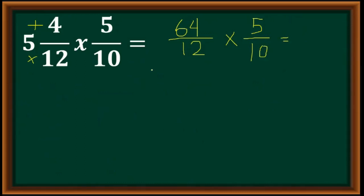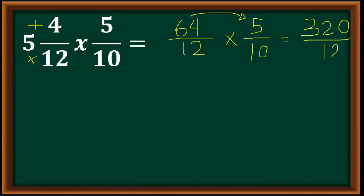Now proceed with multiplication: numerator times numerator and denominator times denominator. So 64 times 5 — 60 times 5 is 300, plus 20 is 320. And 12 times 10 is 120. Shortcut: cancel the trailing zeros. We now have 32 over 12.